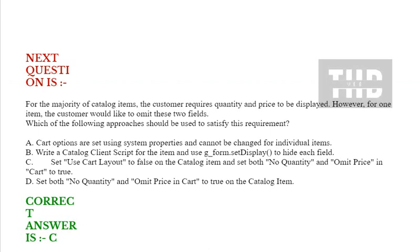Next question: For the majority of catalog items, the customer requires quantity and price to be displayed. However, for one item the customer would like to omit these two fields. Which approach should be used? Option A: cart options are set using system properties and cannot be changed for individual items. Option B: write a catalog client script and use g_form.setDisplay() to hide each field. Option C: set 'use cart layout' to false on the catalog item and set both 'no quantity' and 'omit price in the cart' to true. Option D: set both 'no quantity' and 'omit price in the cart' to true on the catalog item. Correct answer is option C.